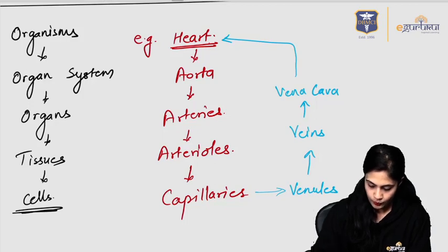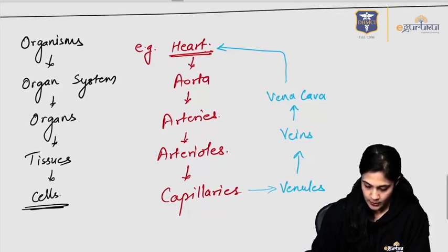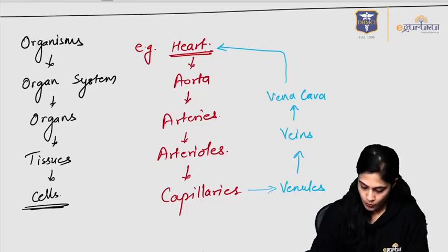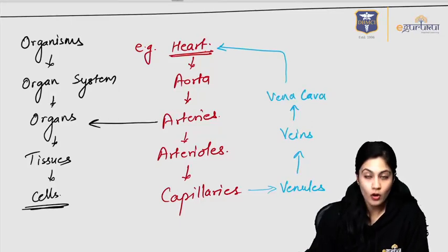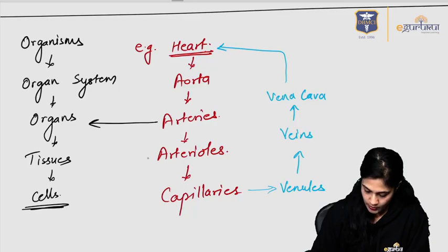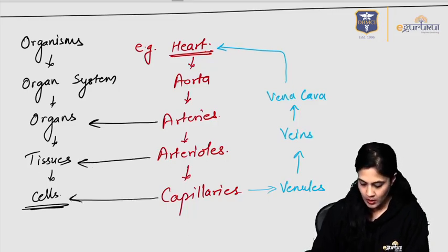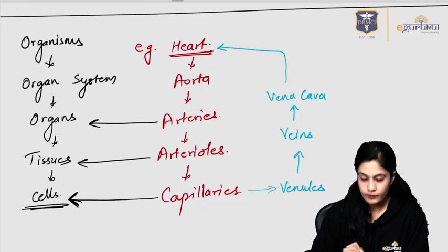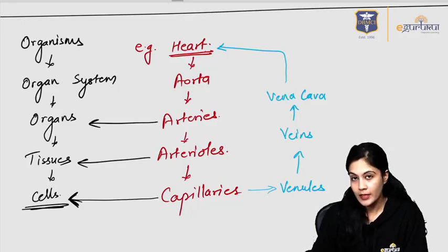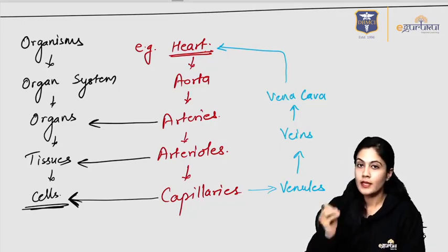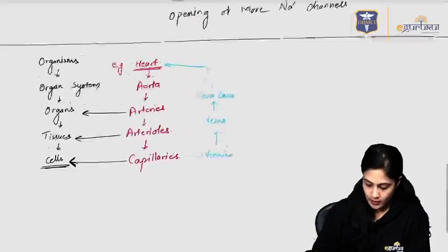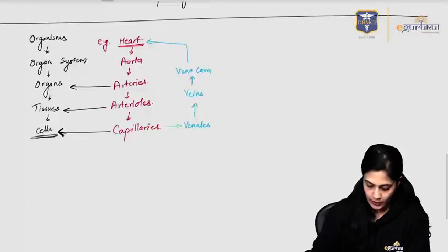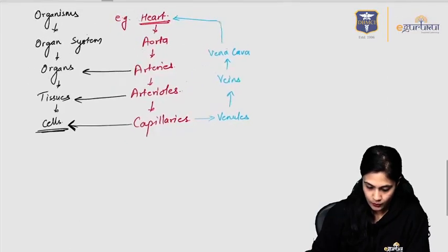There is a link between these structures. Always remember: arteries work at the level of organs, arterioles work at the level of tissues, and capillaries work at the level of cells. If you draw this chart, the examiner will know you understand the concept and you'll definitely get extra marks.